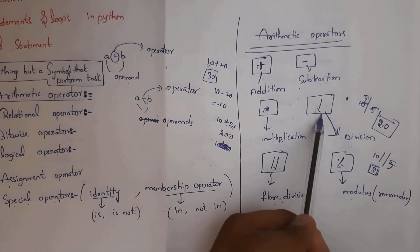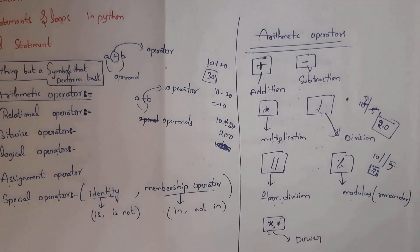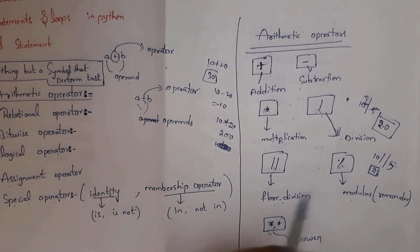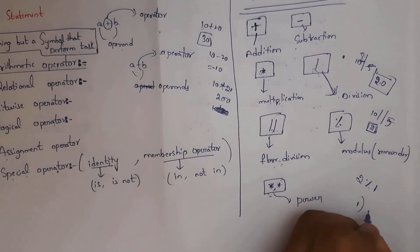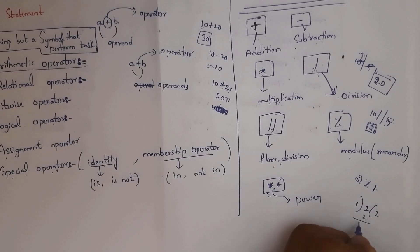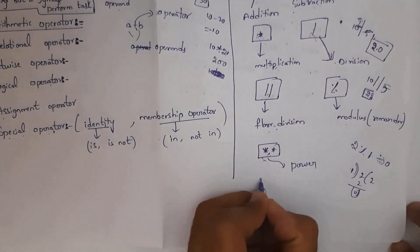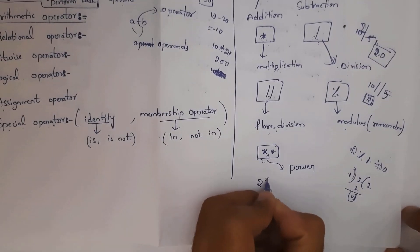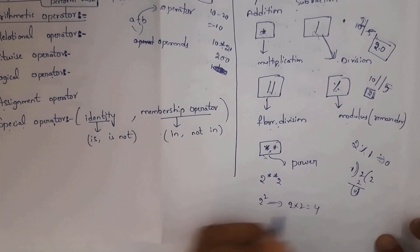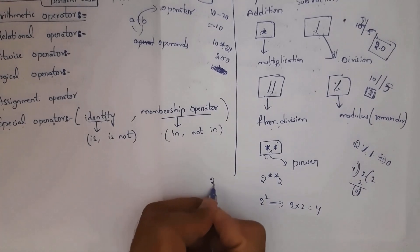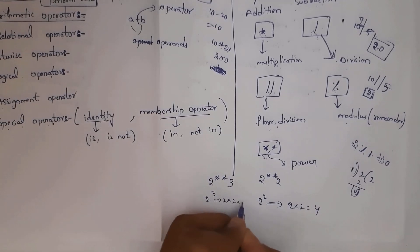The difference between division and floor division: division represents output as float, floor division represents output as integer. The percentage symbol is for modulus — it displays the remainder. For example, 2 % 1: dividing 2 by 1 gives remainder 0. For power, 2 ** 2 means 2 squared = 4, and 2 ** 3 means 2 cubed = 8.